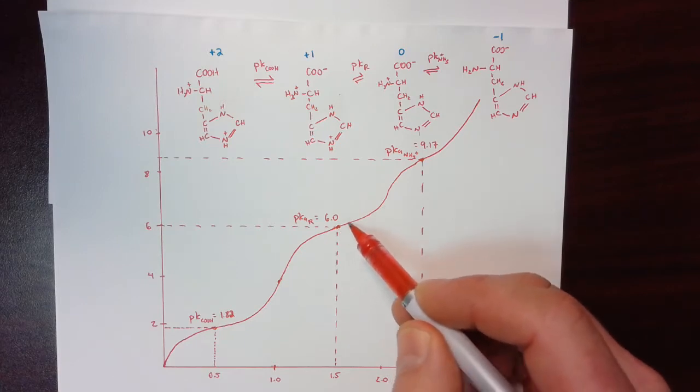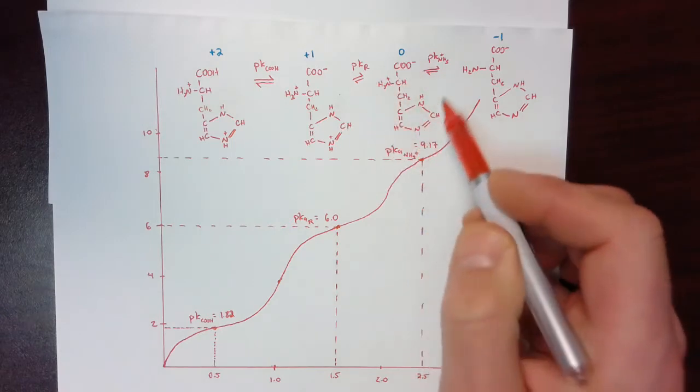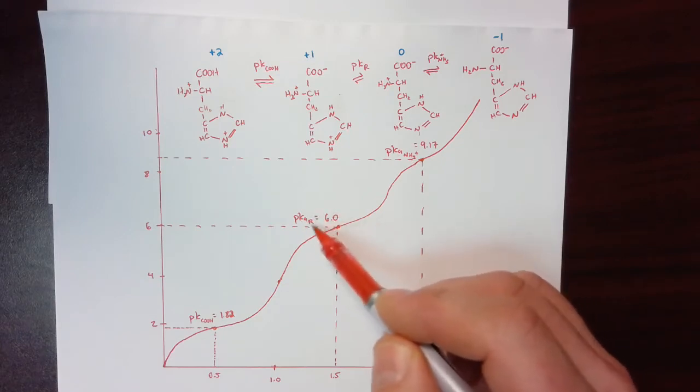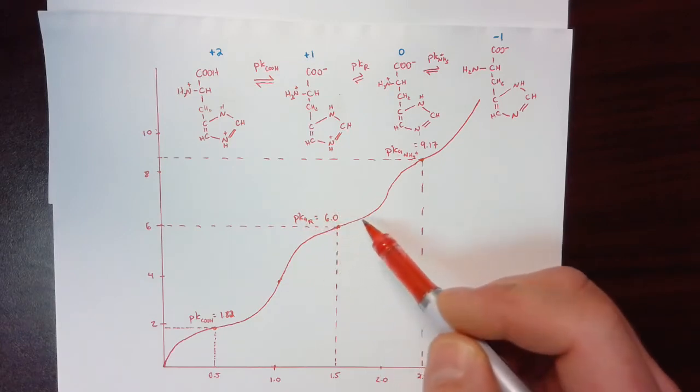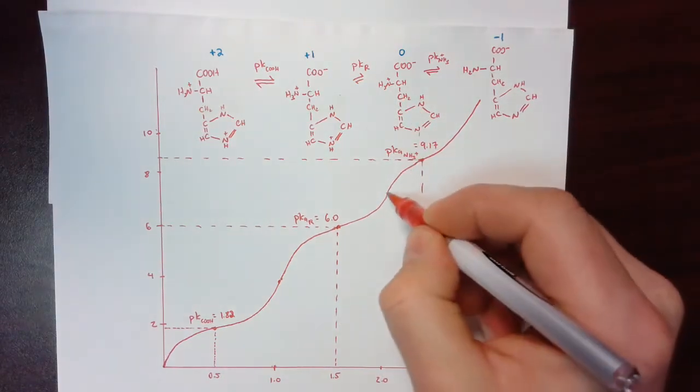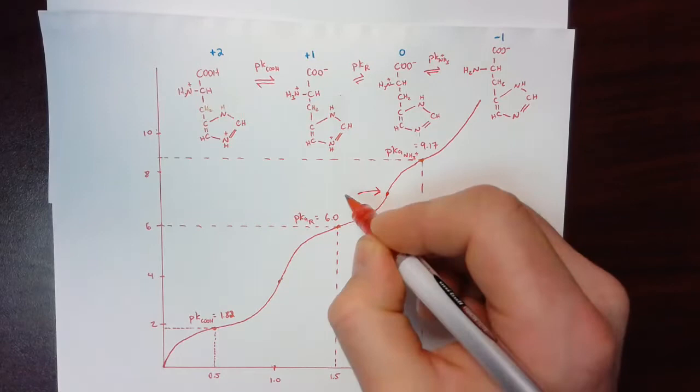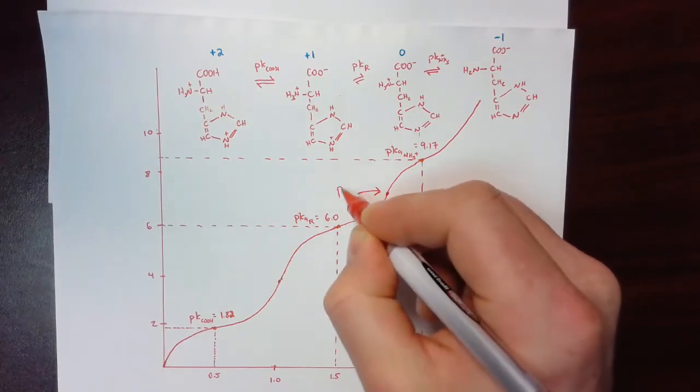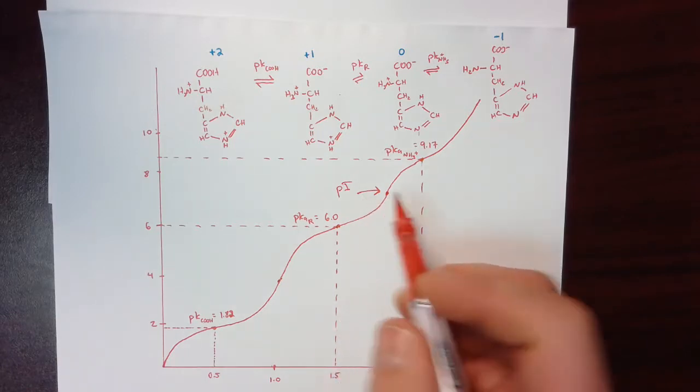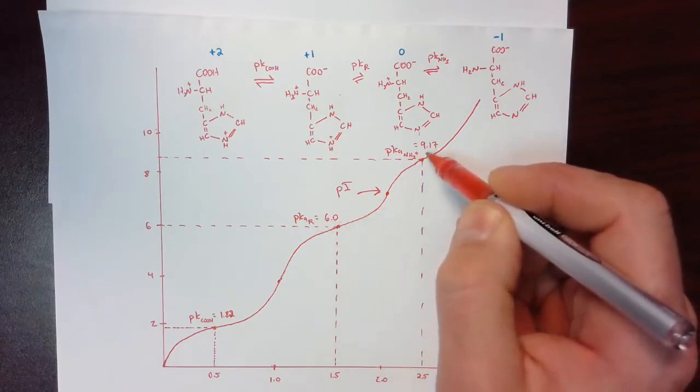Alright, so continuing on adding more and more base, more of the amino acid is going to be in this form here as more base is added above this pH of 6, above this PKR, all the way to the point where we get here. And this particular inflection point is a special one. We call this inflection point the pI. So this is a very specific pH value.